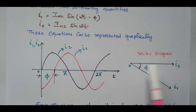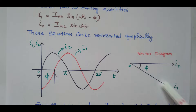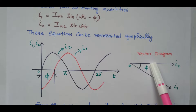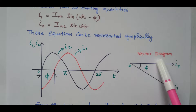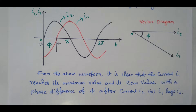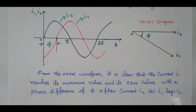In the vector diagram, i2 is shown at 0 degrees. i1 starts later, so it is drawn in the downward direction — if a quantity starts earlier it goes upward, but since i1 is delayed it is negative, shown downward. The angle π between i1 and i2 represents the lagging phase difference. i1 reaches its maximum value and zero value with a phase difference of π after i2. So i1 is lagging i2.